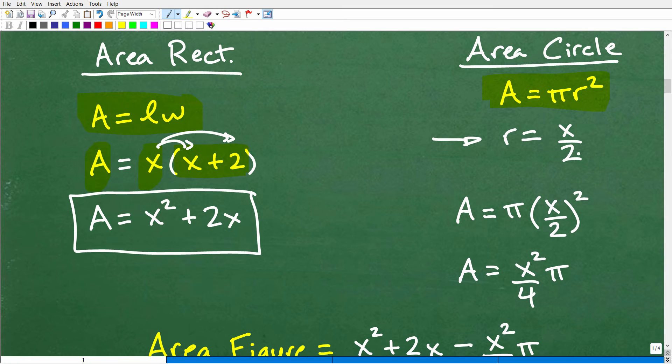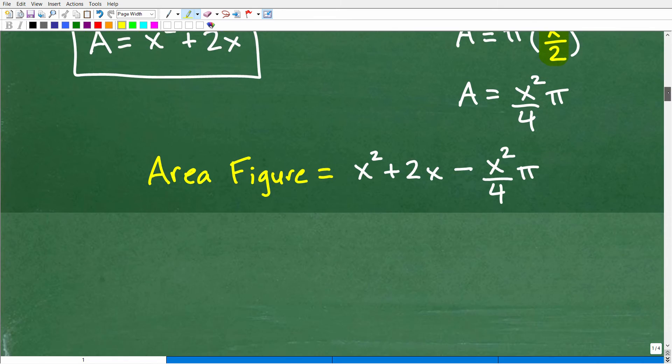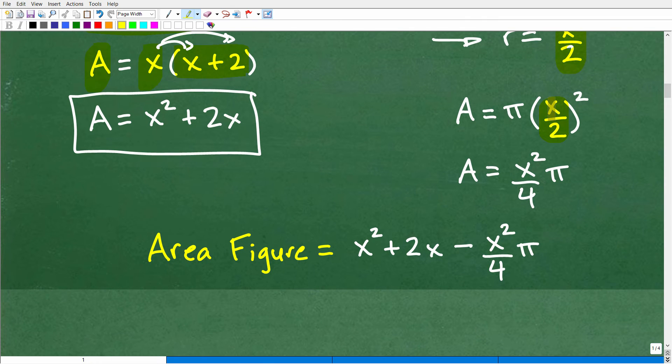So our radius is going to be X over 2. So when we use this formula right here, when I substitute for R, I'm going to be plugging in X over 2. And that's what I have right here. So the area is going to equal π R squared, or in this case, π times X over 2 squared.